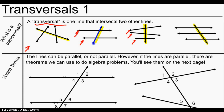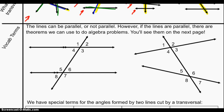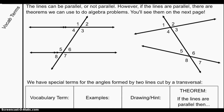A transversal like this one can cut through two parallel lines, or a transversal like this one can cut through two lines that are not parallel to each other and will intersect eventually. So transversals can cut through two lines that are parallel or not parallel — we've got a parallel example here and a non-parallel example here. However, if the lines are parallel, there are certain theorems we can use to do algebra problems, and we'll talk about this on the next page.